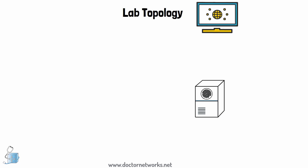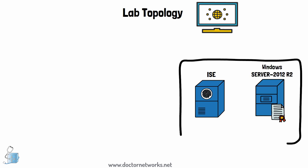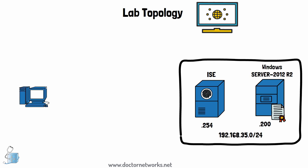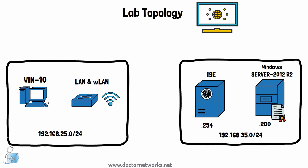Just to familiarize you with the basic topology: we have an ISE 2.7 server and a Windows 2012 R2 server acting as a certificate authority, both in the server VLAN on subnet 192.168.35.0/24. ISE has the IP 192.168.35.254, and the CA server has IP 192.168.35.200. On the other side we have VLAN 25, the user VLAN for wired and wireless clients, with subnet 192.168.25.0/24, and the Windows machine has IP 192.168.25.99. Both networks communicate via a router-on-a-stick setup.